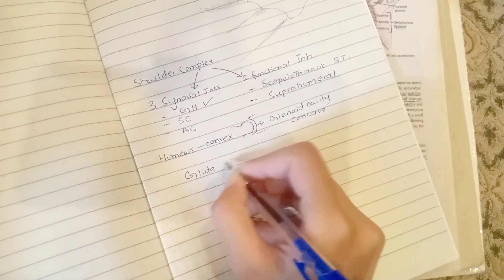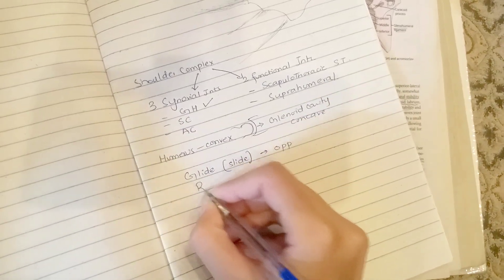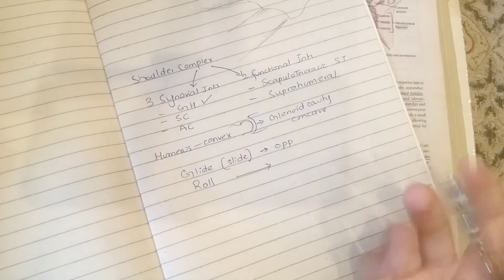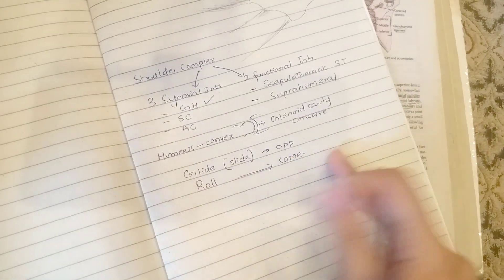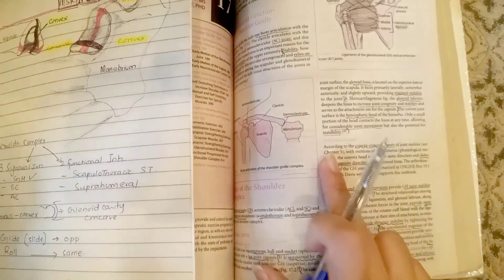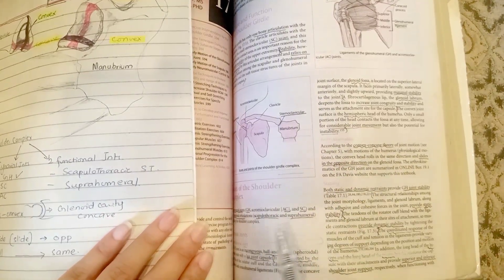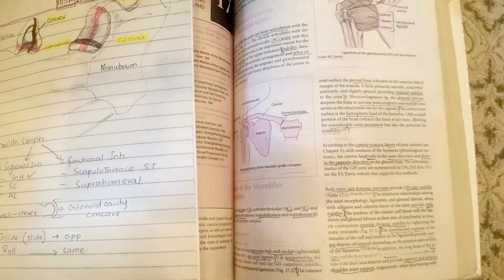The glenoid cavity is concave while the humeral head is convex. Now applying the rule: whenever a convex surface moves on a concave surface, the gliding (or sliding) is always opposite to the direction of the bone movement or the rolling. The rolling is always in the same direction as the movement of the bone. So the arthrokinematic principle states that sliding is opposite on the glenoid fossa while rolling is in the same direction.